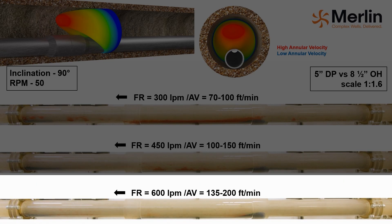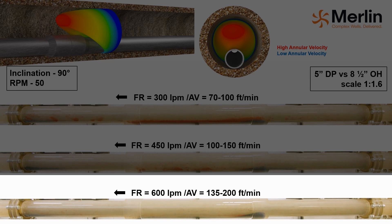On the high flow rate test, circulating at 600 liters per minute, the red low-density cuttings are swept away with no accumulations apparent. Although it can be seen that the high-density blue cuttings still gather at the transition from the in-gauge to enlarged interval, despite this being a smooth change in pipe internal diameter. The annular velocity produced in the in-gauge interval is 200 feet per minute, while in the enlarged interval it drops to 135 feet per minute, which is below the Merlin recommended minimum annular velocity.